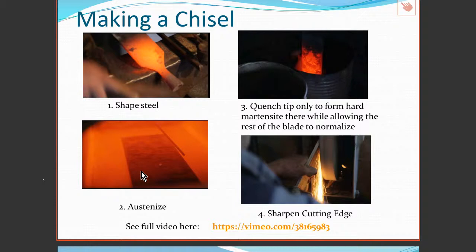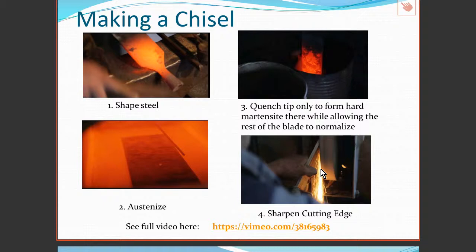The video shows the forging and shaping. Here we're austenitizing — heating the steel until it's all austenite. When it's quenched, only the tip is quenched — the tip that would be used for cutting wood — because we want that part to be very hard, but the rest must be tough. We don't want the chisel to snap. The tip is hardened and given its final sharpened cutting edge. Once the material has been hardened this way, we must be careful not to reheat the blade and inadvertently soften it — abusing a chisel by putting it into a flame is likely to result in an ineffective tool.